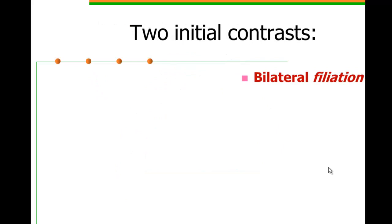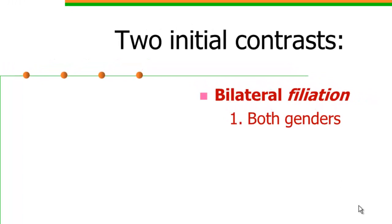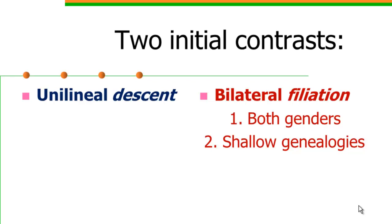So we can start then with two initial contrasts. Bilateral affiliation involves both genders and tends to produce very shallow genealogies. And frequently, these tap out at the grandparents or the great-grandparents. So basically, it's living memory. Unilineal descent follows just one gender, either patrilineal or matrilineal. And as a result, you can have very deep genealogies. You don't always see this, but it's a possibility. Again, you achieve that deep genealogy by ignoring most of the links that are possible to follow.